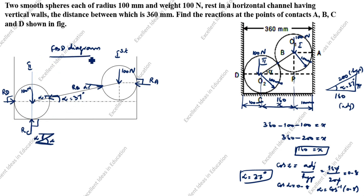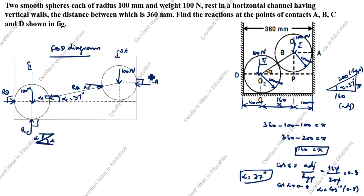Now we finish the FBD drawing and move to the second step. We will use both Lamy's theorem and the equilibrium condition to solve this problem. For sphere one, there are three concurrent forces, so we can use Lamy's theorem. For sphere two, there are four forces, so we cannot use Lamy's theorem there — we will use the equilibrium condition instead. I will show you both methods.